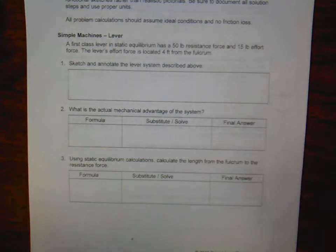So the first one here we have is our simple machine, which is our lever. Now the problem, the biggest thing is that you read the problem carefully and identify all the variables. So a first-class lever in static equilibrium had a 50-pound resistance force and 15-pound effort force. The lever's effort force is located 4 feet from the fulcrum.